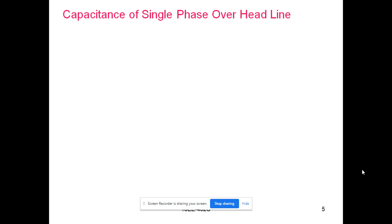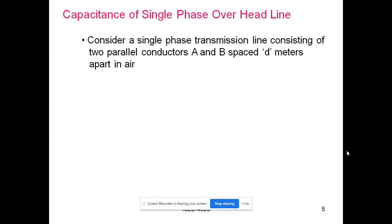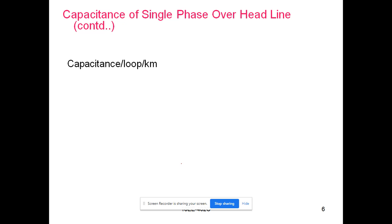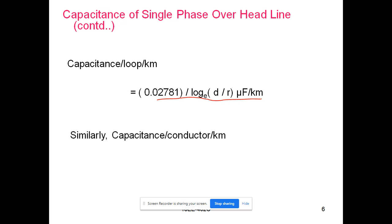For the capacitance of a single phase transmission line, we consider two conductors A and B separated by a distance of d meters, where the radius of each conductor is R. The expression for capacitance per loop per kilometer is 0.02781 divided by log_e(d/r) microfarads per kilometer.